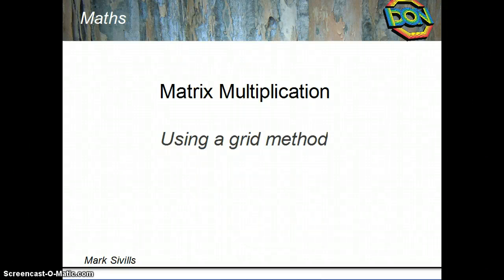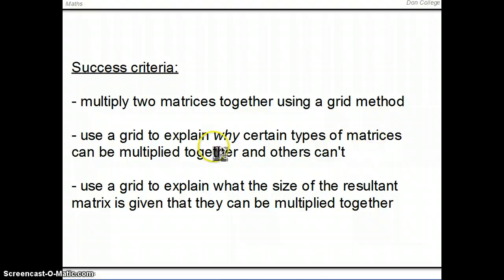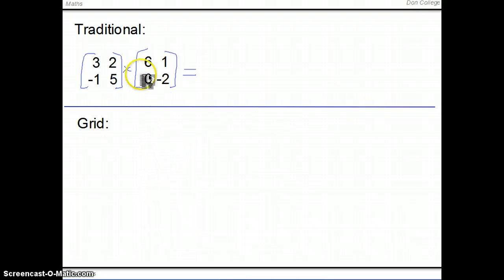Hi, this video is on matrix multiplication, specifically on using a grid method instead of the traditional method. Hopefully by the end of this video you'll be able to multiply two matrices together using a grid method, use a grid to explain why certain types of matrices can and can't be multiplied together, and use the grid to explain what the size of the resultant matrix is. We'll start by looking at multiplying two 2 by 2 matrices.